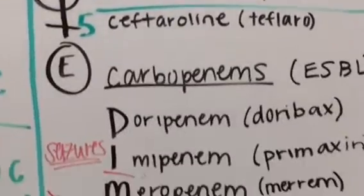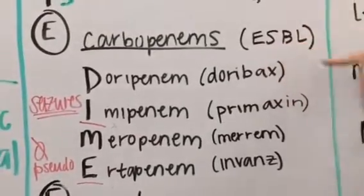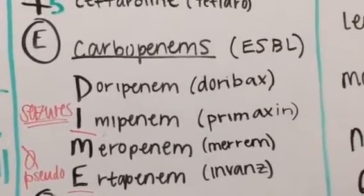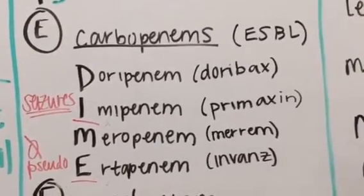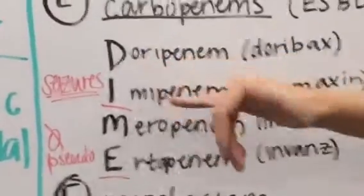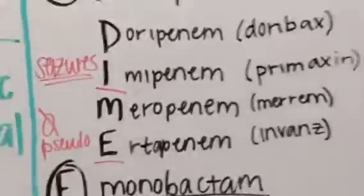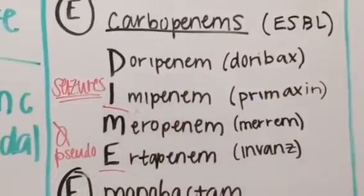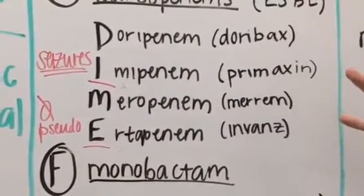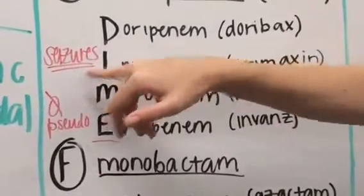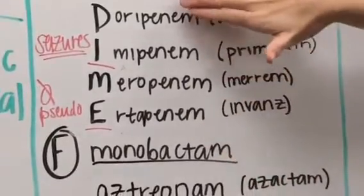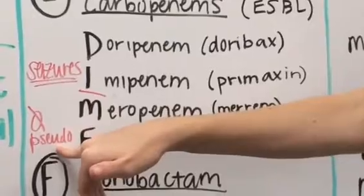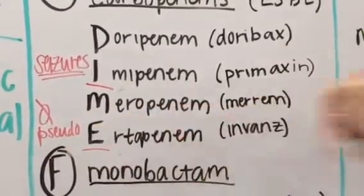Then we move into our carbapenems. These are mainly used for ESBL — extended spectrum beta-lactamase producers — so they have really broad spectrum coverage and aren't typically used unless we're concerned about resistance. I remember these because the first initials spell out DIME: doripenem, imipenem, meropenem, and ertapenem. With imipenem, we worry about seizure side effects. Ertapenem differs from the others in that it doesn't cover Pseudomonas.